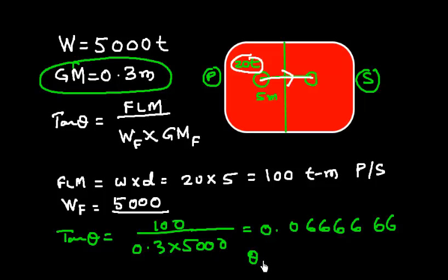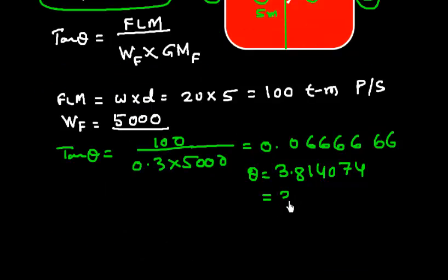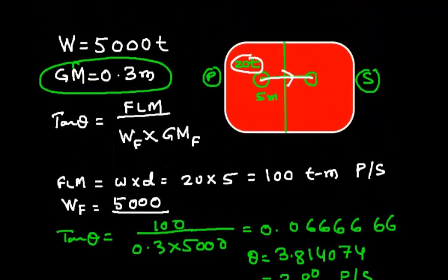So I get theta equals 3.814074. I can round off to 3.8 degrees. It could be port or it could be starboard depending where we have shifted this weight.